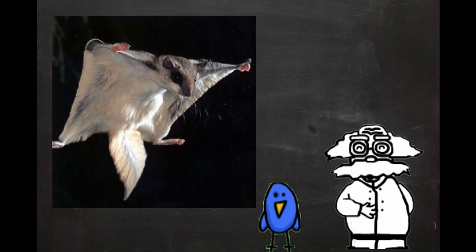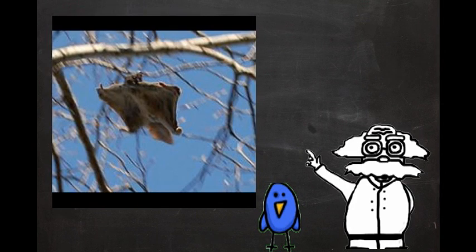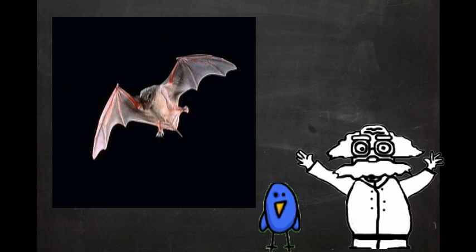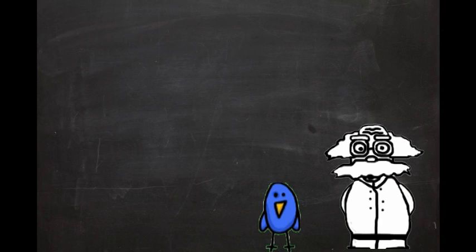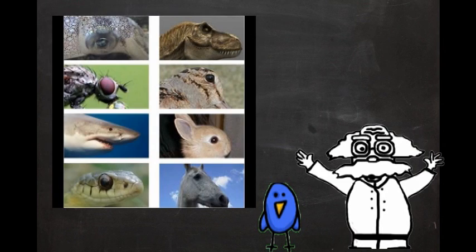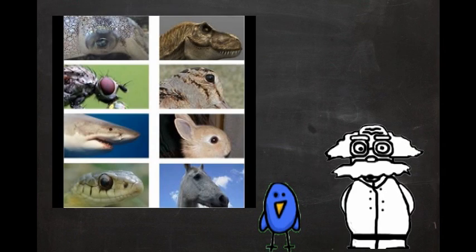For example, the membrane that allows some squirrels to glide looks very similar to the more advanced setup that allows bats to actually fly. And on the subject of vision and the evolution of sight, there are examples all around the world of creatures with less complex vision organs.